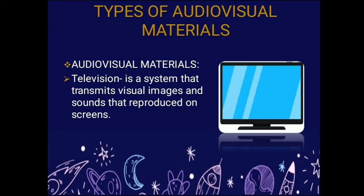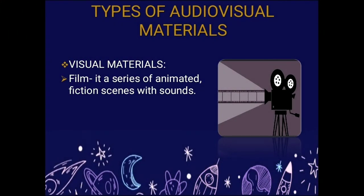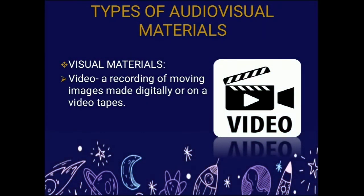Next, audio visual materials. First, television — a system that transmits visual images and sounds reproduced on a screen. Educational programs can help the development of children's socialization and learning skills. Second is film — a series of animated and fiction scenes with sounds. Many students respond better while watching film, keeping their interest and preventing distraction. Third is video — a recording of moving images made digitally or on video tapes, used for recording, copying, playback, broadcasting, and display of visual media.